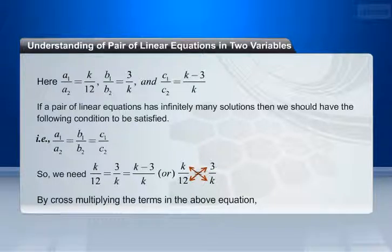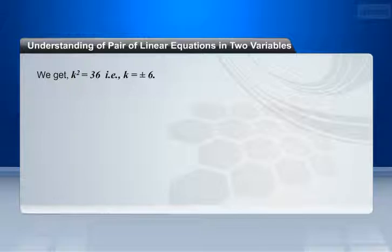By cross multiplying the terms in the above equation, we get k² = 36. That is, k = ±6.